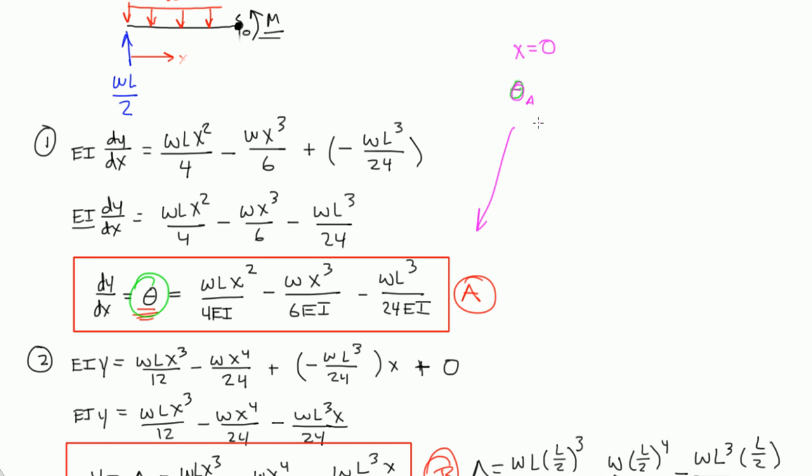So let's plug in X is equal to zero into equation A to figure out what the slope or the rotation at pin A is. So beta A is equal to WLX squared, and X is zero squared, zero squared over 4EI, minus W and X is zero cubed over 6EI, minus WL cubed over 24EI.